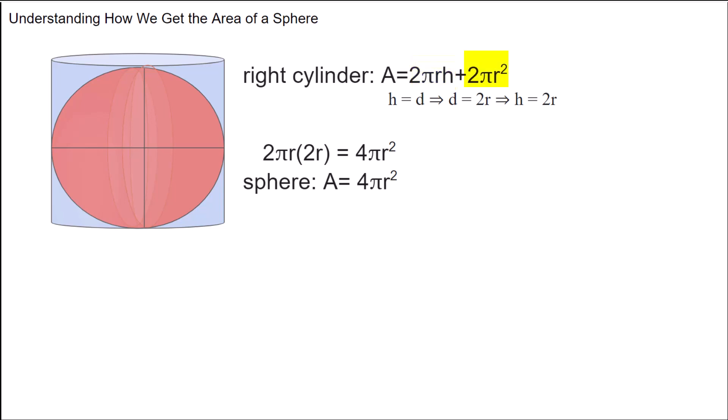Then you have 2πr². The reason you have 2 here is because πr² is the area of one end cap. So to get the area of both of them, you need to multiply that by 2.